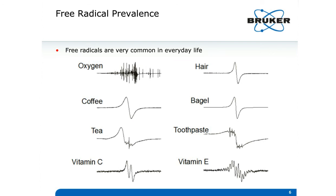About 20% of the air you breathe is paramagnetic, as molecular oxygen is paramagnetic due to its triplet state. Your morning coffee contains carbon-based radicals from roasting. If you're more of a tea drinker, tea contains manganese, iron, and catechols that will have free radicals. Toasting your bagel creates free radicals. Your daily multivitamin contains antioxidants like vitamins C and E. Even toothpaste contains manganese, which can be EPR active. And your hair contains the pigment melanin, which is also a free radical.